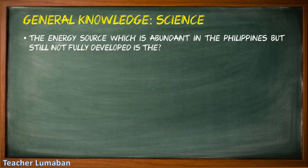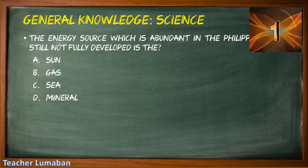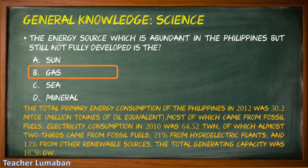The energy source which is abundant in the Philippines but still not fully developed is: Letter A: Sun, Letter B: gas, Letter C: coal, Letter D: mineral. The correct answer is Letter B: gas. The total primary energy consumption of the Philippines in 2012 was 30.2 Mtoe (million tonnes of oil equivalent), most of which came from fossil fuels. Electricity consumption in 2010 was 64.52 TWh, of which almost two-thirds came from fossil fuels, 21% from hydroelectric plants, and 13% from other renewable sources.